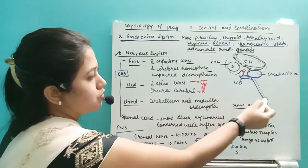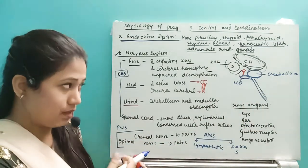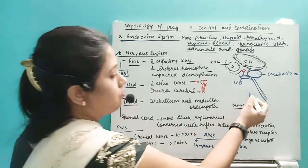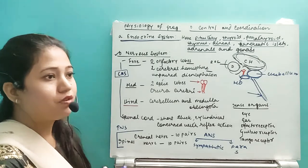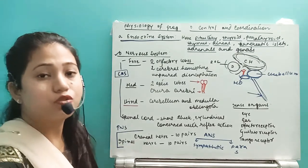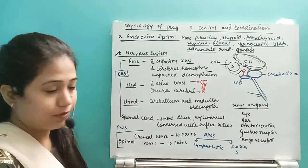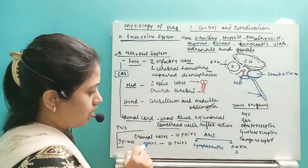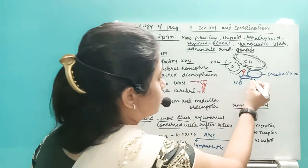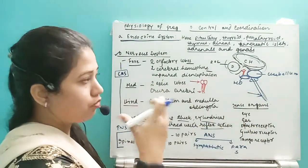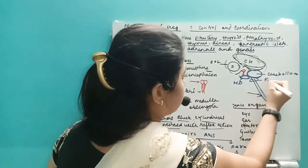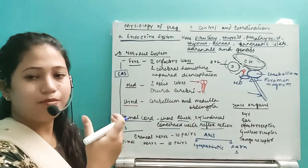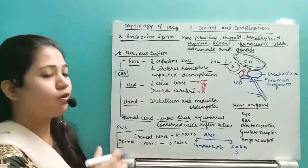Next is the spinal cord, which arises from the medulla oblongata and extends downward. The spinal cord is associated with reflex action — whenever we are in an emergency, the performance we do is called reflex action. The spinal cord is short, thick, and cylindrical, and is concerned with reflex action. The medulla oblongata extends from a hole in the skull bones known as the foramen magnum, and from there it extends to form the spinal cord. This forms the central nervous system.